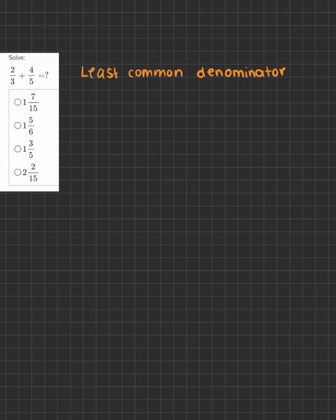Okay, so in this problem we're asked to add two fractions together. Now in order to add fractions, we have to make sure that we have a least common denominator. A denominator, in this case, is our 3 and our 5.